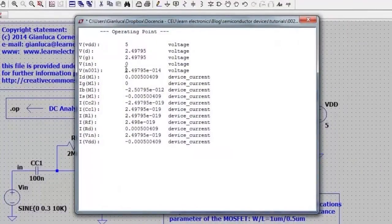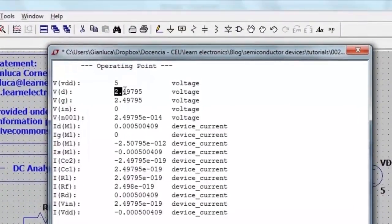I can see that my drain current is now approximately 0.5 milliamps. And the output voltage, that is the drain voltage, is approximately 2.5 volts.